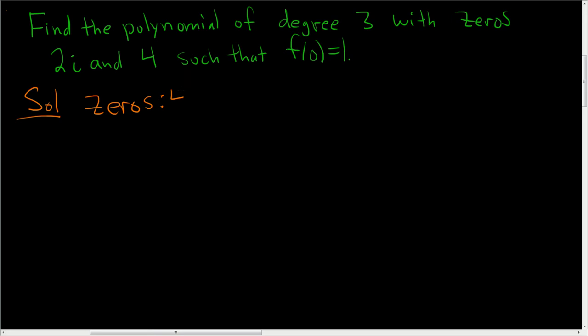We're told that 4 is a zero, so we have that one. We're told that 2i is a zero, so we have that. But any time we have a zero that's a complex number, its conjugate must also be a zero.